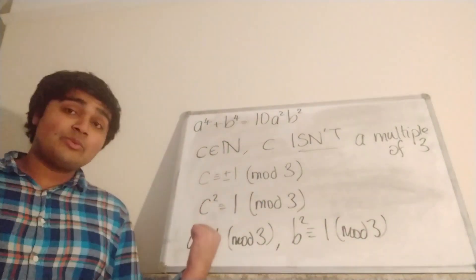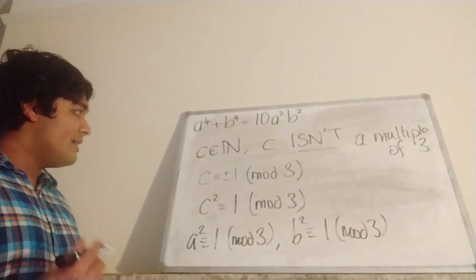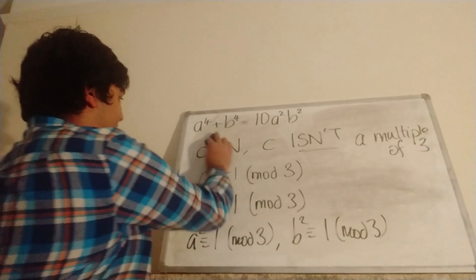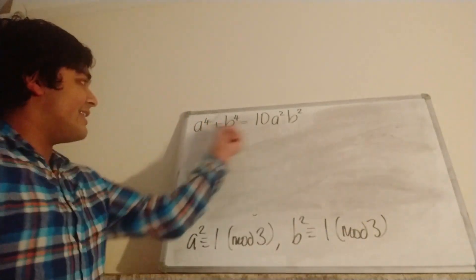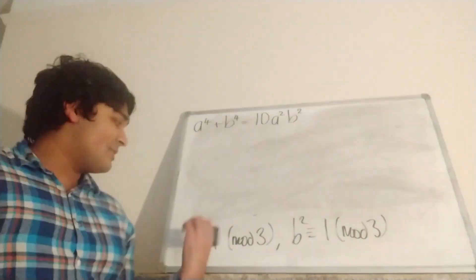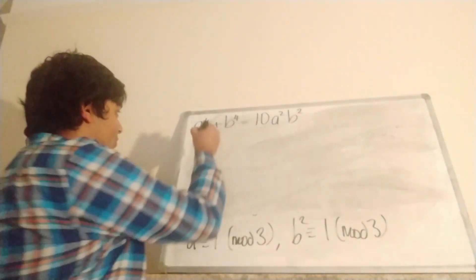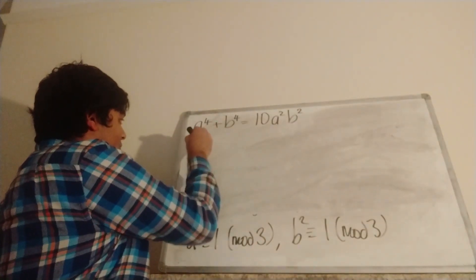So A² is congruent to 1 mod 3, so certainly A⁴ is congruent to 1 mod 3. So let me just write that up here. So we're essentially just looking at this equation mod 3. A² is congruent to 1 mod 3, so so is A⁴. So this guy here is congruent to 1.